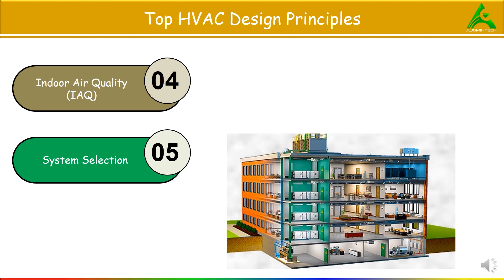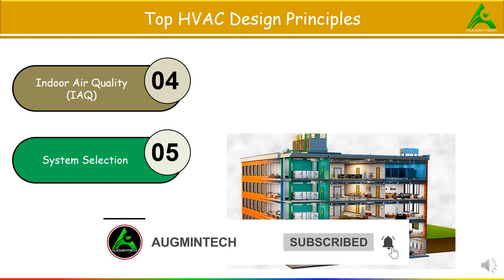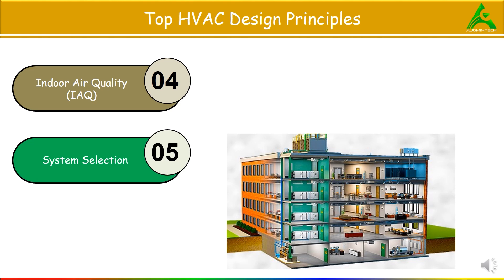The fifth design principle is System Selection. Here we choose an HVAC system that matches the building usage, climate, and budget for optimum performance. For example, a shopping mall in a tropical climate requires a chilled water system because it handles large, consistent cooling loads effectively and is cost-efficient for a central plant serving multiple zones. The chilled water system allows for scalable cooling, ensuring comfort for shoppers even on peak days.